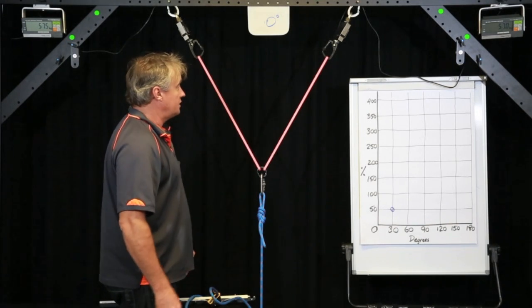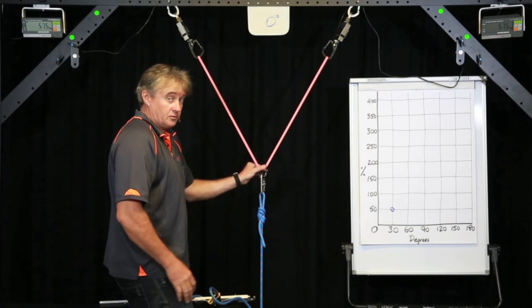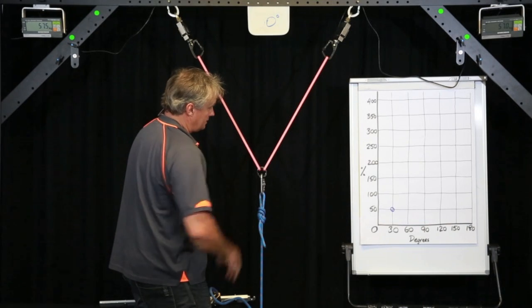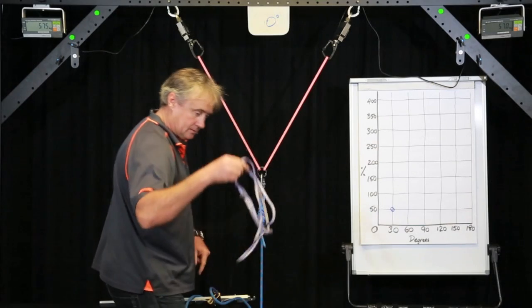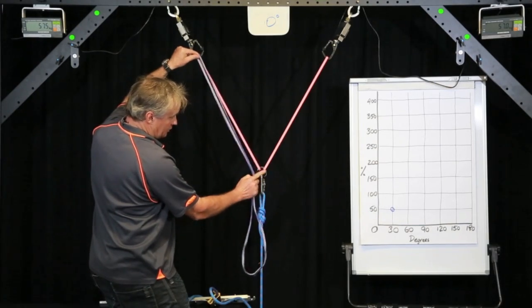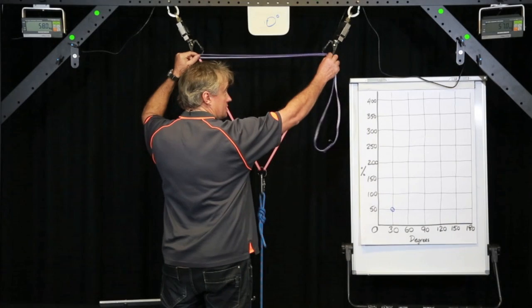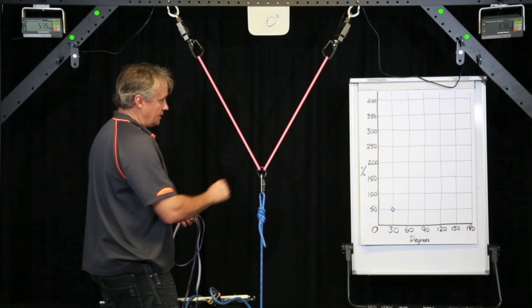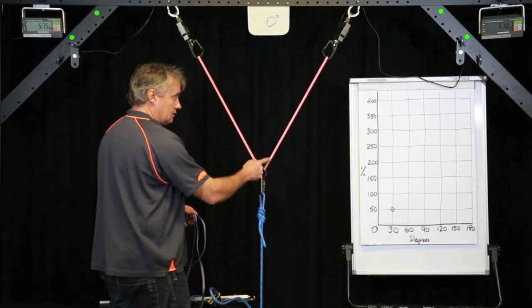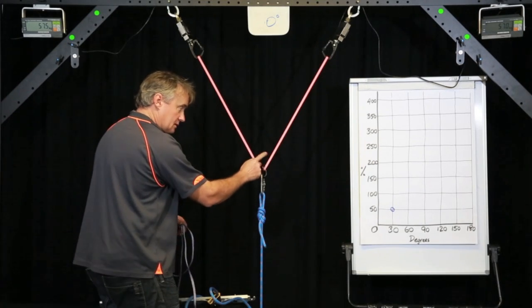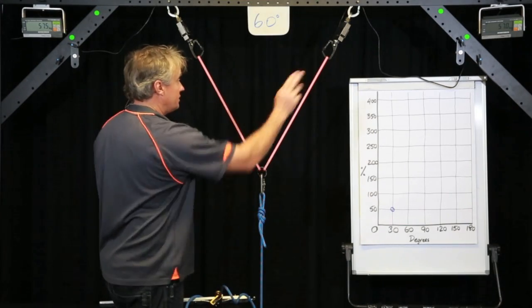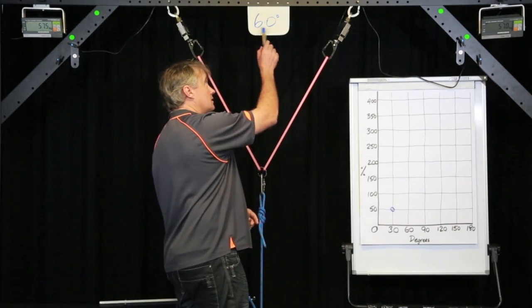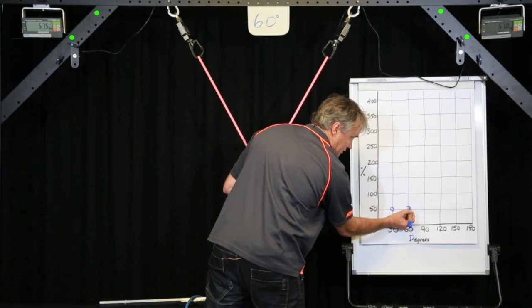So now we've got a 60 degree or pretty close to a 60 degree angle. If we take this length from the focal point to one anchor, and if it's the same distance across the top and the same distance down this side, we've got ourselves an equilateral triangle. So in an equilateral triangle if all sides are equal, all angles must be equal, which means this angle must be 60 degrees. 57 there, 57.5 there. We're going to round that to 60. So 60 degrees equals 60%. Nice and easy to remember.